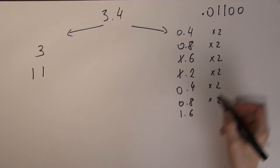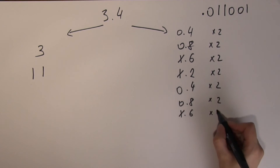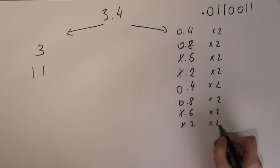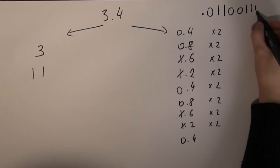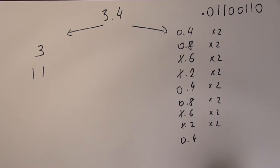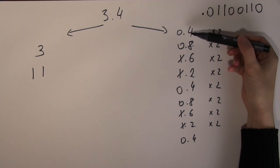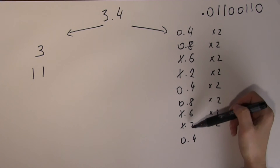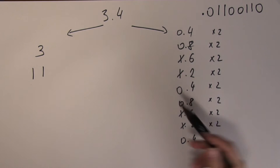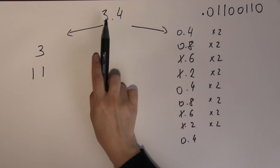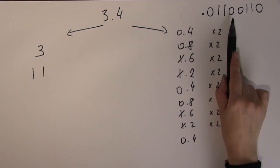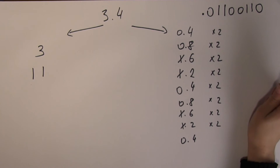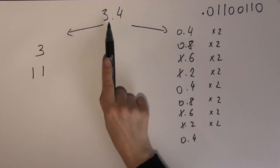Double of 8 is 16 — so I've got a 1. Double of 6 is 12 — another 1. Double of 2 is 4 — then a 0. And hold on, I'm repeating myself. Look: 0.4, 0.8, 6, 2, 4, 8, 6, 2, 4, 8, 6, 2 — this simple decimal fraction 3.4 is an infinitely recurring binary fraction. So that again shows you some difficulties when it comes to converting decimal fractions to binary fractions.